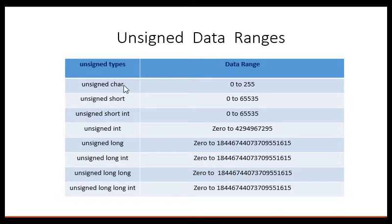Let's take the simpler version, unsigned char. The data range is 0 to 255. What it means is, if you declare a variable, let's take it to the whiteboard.